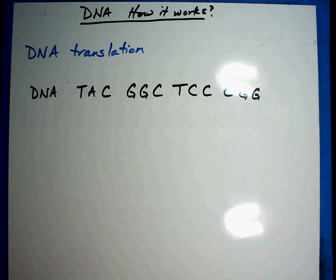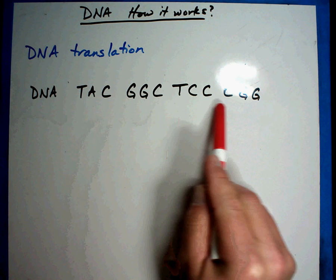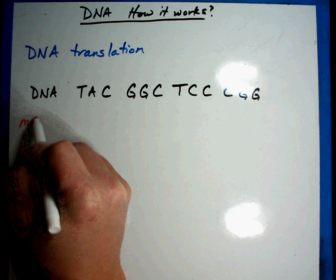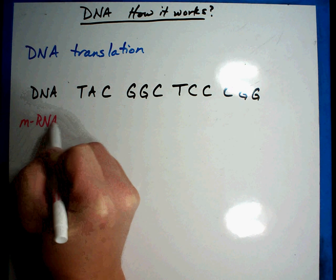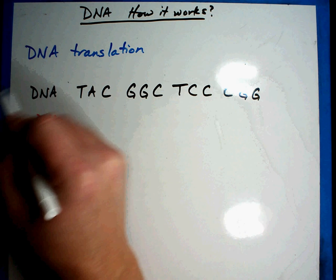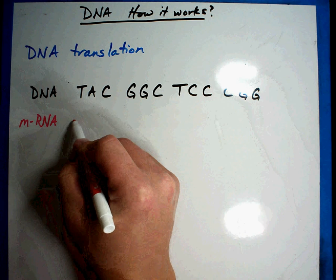Now in the last lesson what we talked about was having a strand of DNA and here's a sample of DNA. And the first thing that we did was we made a piece of messenger RNA. Just a reminder, it is the secret code that comes off the master plan and will be sent out to tell the cell exactly what to do.